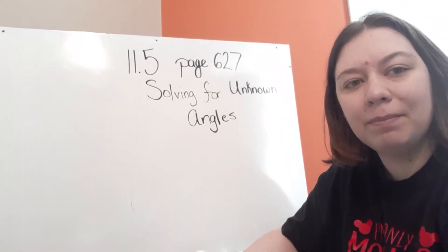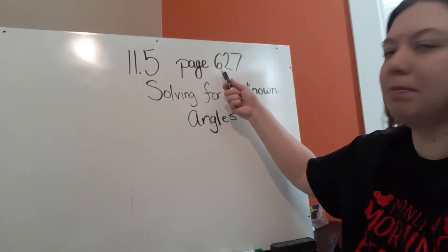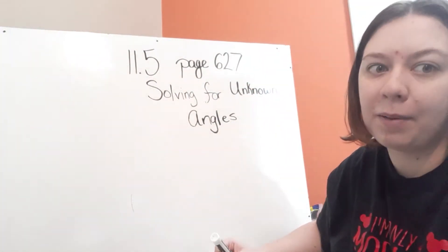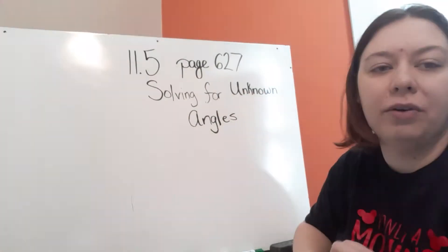Welcome back fourth grade. Today our lesson is going to be on 11.5, which is page 627 in your Go Math books. Today we're looking at problem solving, focusing on solving for an unknown angle.